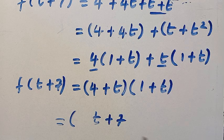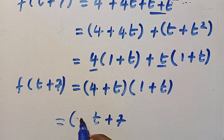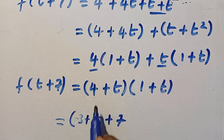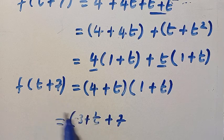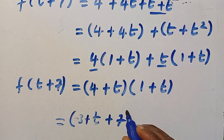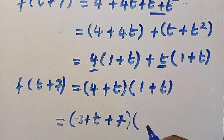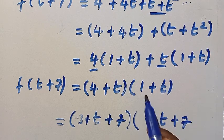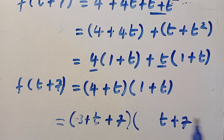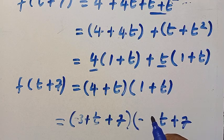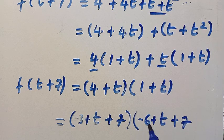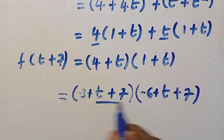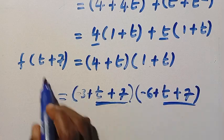Suppose we have t plus 7 already. We need something to take out from this that will give us 4 plus t. It is when we subtract minus 3 from this: minus 3 plus t plus 7 gives us 4 plus t. And we need t plus 7 as well. It was initially 1 plus t, so we subtract 6 from it: minus 6 plus t plus 7 gives us 1 plus t. Then we replace t plus 7 with t.